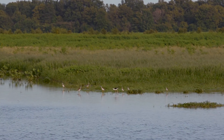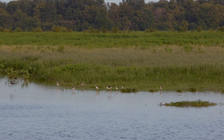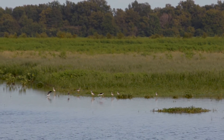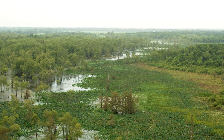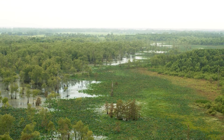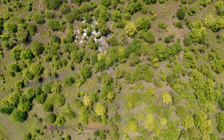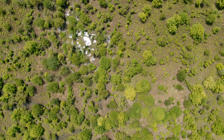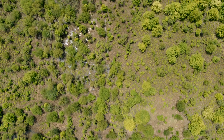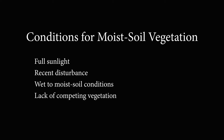Moist soil impoundments represent the earliest wetland successional stage. Historically, they would have occurred after a major disruption in the canopy of a forested wetland or the draining of a deep open water area where little to no vegetation occurred. This resulted in four necessary conditions for annual moist soil vegetation to establish: full sunlight, recent disturbance, wet to moist soil conditions, and the lack of competing vegetation, all occurring during the growing season.